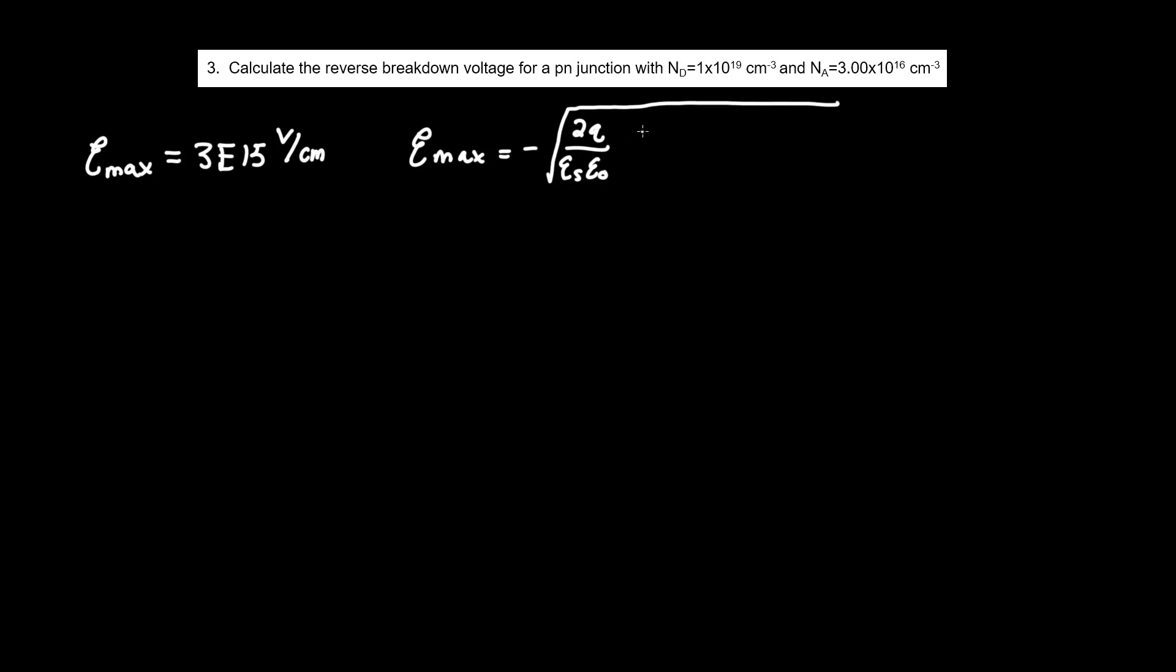And all of this times NA times ND over NA plus ND times V0 plus VR, where V0 is the built-in potential barrier and VR is the reverse voltage applied, or in this case VR would represent VBR, or V breakdown voltage. So our ultimate goal right now is to find this variable here.